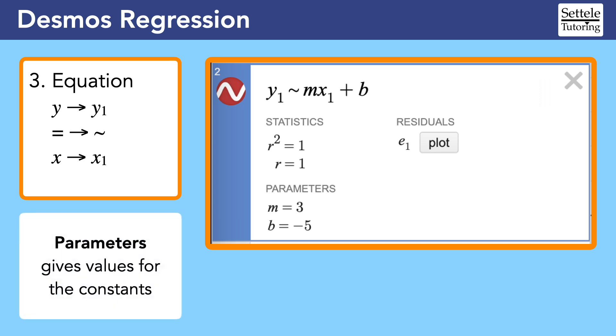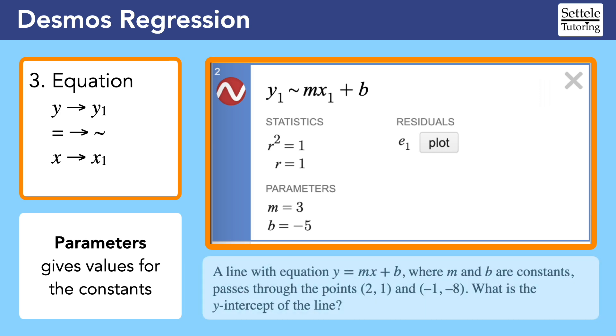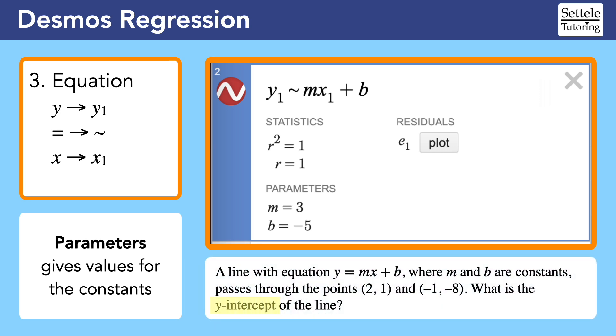We are much more interested in the part that says parameters. This is Desmos telling us the values for the constants in our equation. If we look back at the original question, we see that we were asked for the y-intercept of the line.